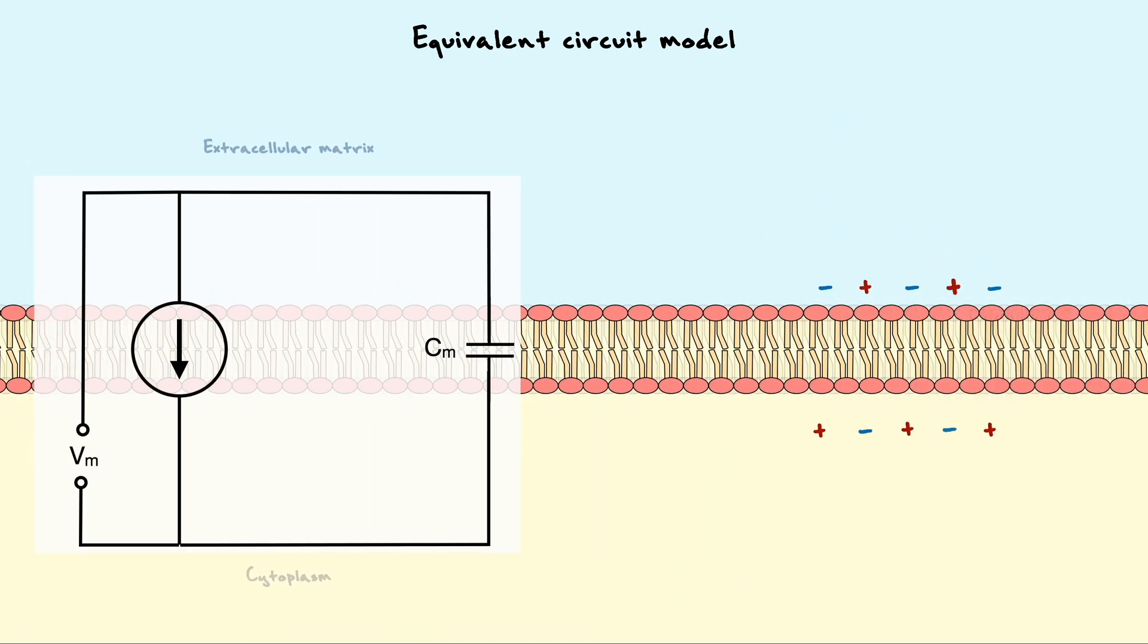Alright, so to understand these properties, let's begin small by greatly simplifying the circuit we have made. For the moment, let's not even think about the ion channels and only consider the capacitance of the cell. Also, let's assume that the capacitor is discharged.